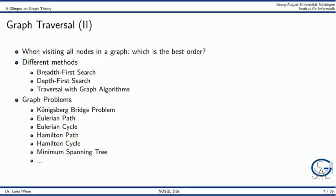Graph traversal has also been analyzed in graph theory. For example, when we want to visit all nodes in a graph, the two major methods are breadth-first search and depth-first search. Graphs can also be traversed with graph algorithms like shortest path. Moreover, several graph problems have been analyzed in theory, and for some of them, implementations are available in graph databases too.